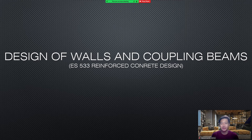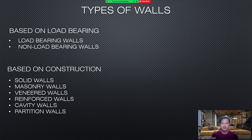Today, I will discuss about design of walls and coupling beams on ES533 reinforced concrete design. Types of walls based on load bearing: it has two types, load bearing walls and non-load bearing walls. Based on construction: solid walls, masonry walls, veneered walls, reinforced walls, cavity walls, and partition walls.